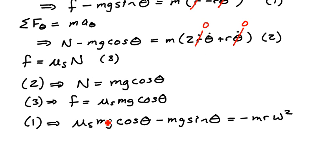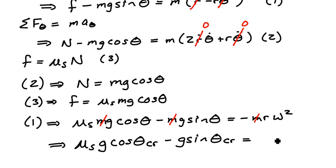I can note in this expression that mass will cancel out from each term, and so what I'll be left with here is a relationship for which I can solve for mu s. Namely, I'll have mu s times g times the cosine of the theta critical value minus g times the sine of the theta critical value is equal to minus r omega squared.